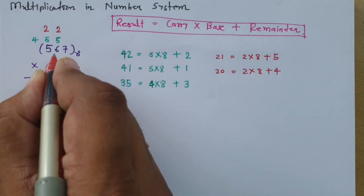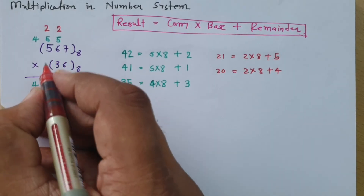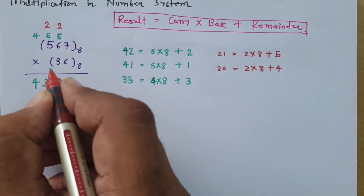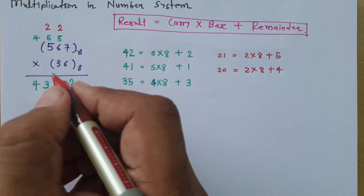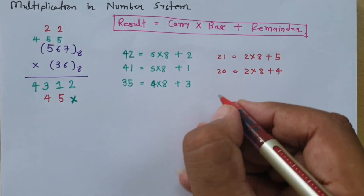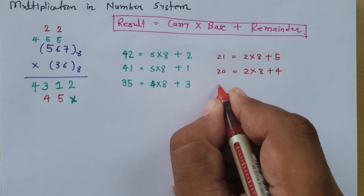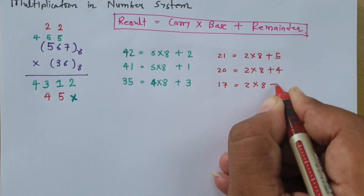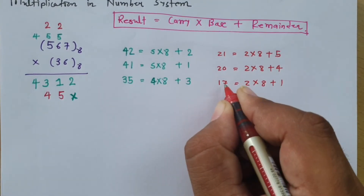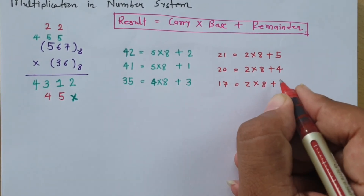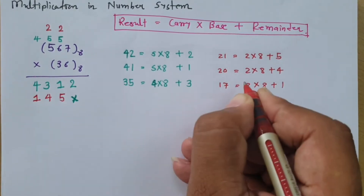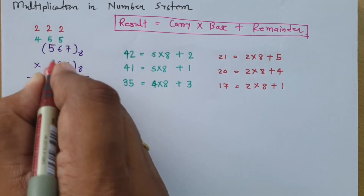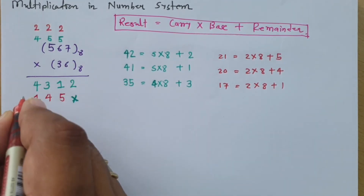Now 3 into 5 is 15, plus carry 2 gives 17. Writing 17 in octal: 2 × 8 plus 1 equals 17. So 1 is the remainder, written in the result, and carry 2 is placed to the next position. As there is no further multiplication, this 2 carries directly into the result.